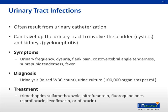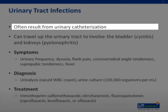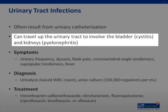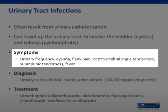Urinary tract infections often result from urinary catheterization during and after labor. Catheterizations are required for epidural and spinal anesthesia to avoid urinary retention. Urinary tract infections can travel up to involve the bladder and the kidneys, causing cystitis and pyelonephritis. Symptoms include urinary frequency, dysuria, flank pain, costovertebral angle tenderness, suprapubic tenderness, and fever.